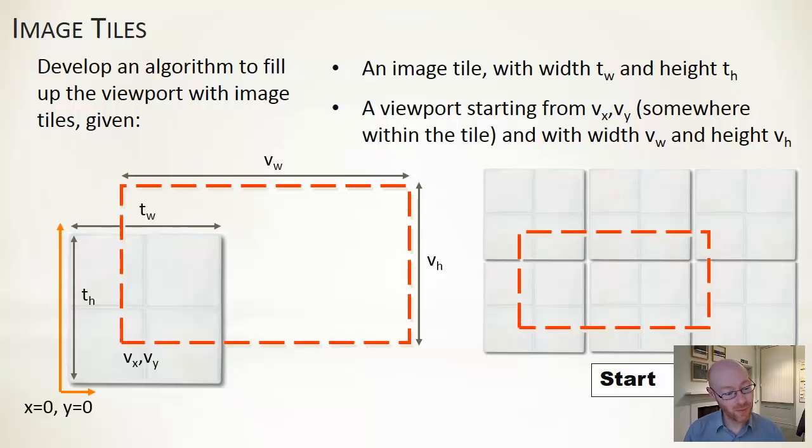And onto that we're drawing a tile with a start location at the bottom left-hand corner with a tile width and a tile height. So how would you create an algorithm that would populate and fill in all of the viewport by tiling that particular image? You may want to pause here and take five or ten minutes to think about how you would do that.